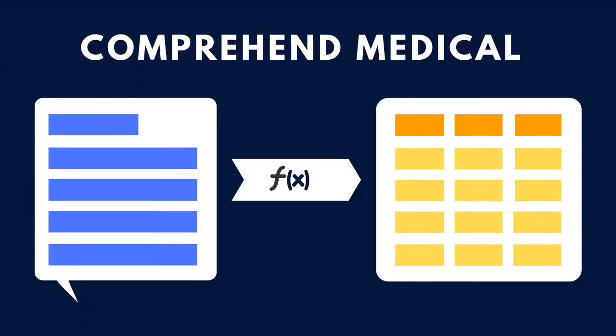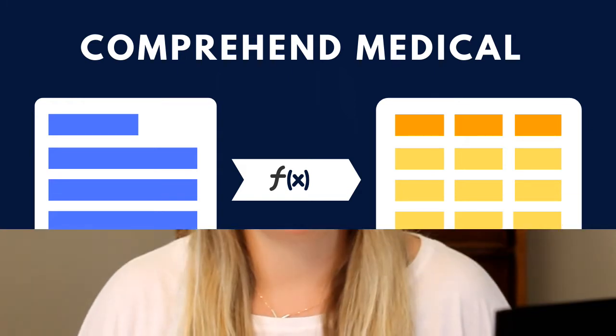Comprehend Medical is an artificial intelligence service offered by AWS. It's a series of natural language processing models that help transform unstructured text — like medical text — into a structured format, which is a table. So it extracts important information out of medical text such as patient data, diagnosis, treatments, and drug names, and puts it into table format for further analysis.